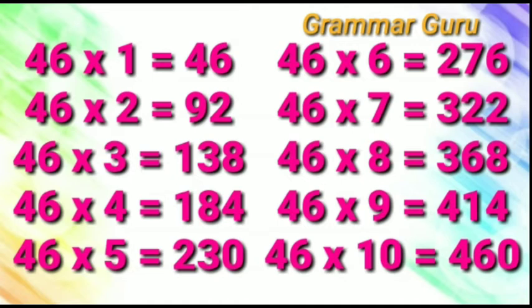46 sixes are 276. 46 sevens are 322. 46 eights are 368. 46 nines are 414.